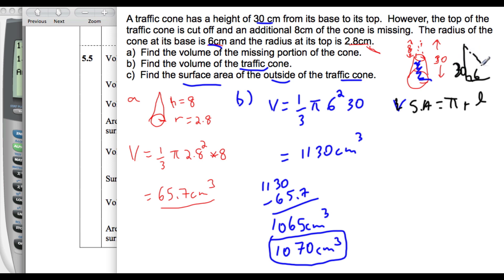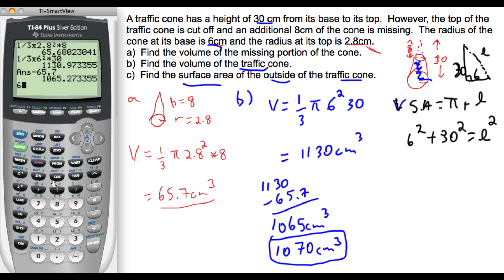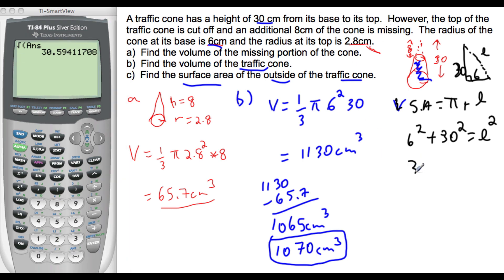We can use those two pieces of information to find the L, or the slant height, by 6 squared plus 30 squared is the slant height squared. 6 squared plus 30 squared gives us 936. We need the square root of that, which gives us 30.6 is the slant height of the whole thing.